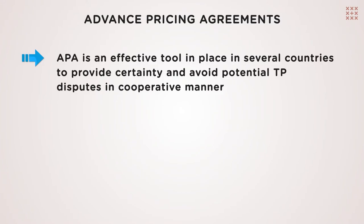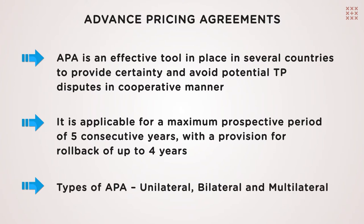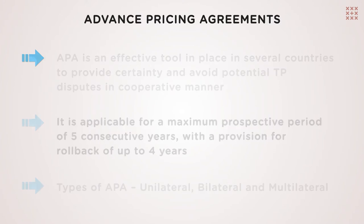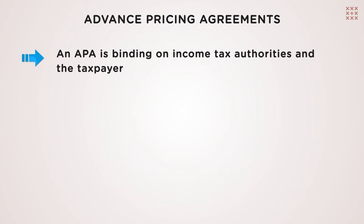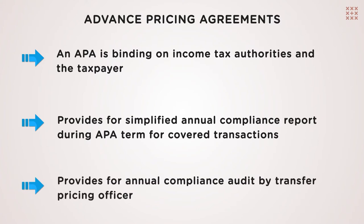Advanced Pricing Agreements, or APA, is an effective tool in place in several countries to provide certainty and to avoid potential TP disputes in a cooperative manner. It is applicable for a maximum prospective period of consecutive five years, with a provision for rollback of up to four years. Different types of APA are unilateral, bilateral and multilateral. An APA is binding on income tax authorities and the taxpayer as well. It provides for a simplified annual compliance report during the APA term for covered transactions, and also provides for an annual compliance audit by the transfer pricing officer.